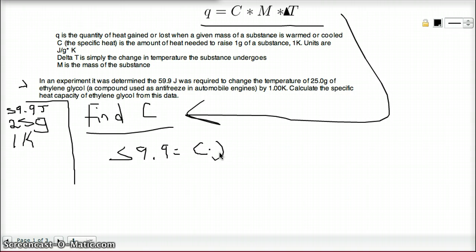59.9 equals C times 25 times 1. And that means C is equal to, get my calculator now, 59.9 divided by 25.